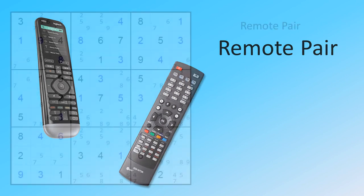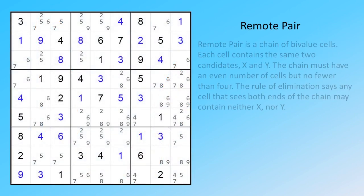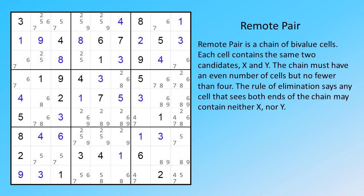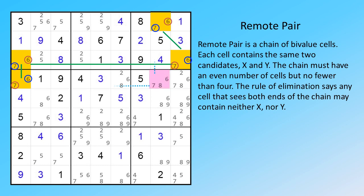Remote Pair. Remote pair is a chain of bivalue cells. Each cell contains the same two candidates, X and Y. The chain must have an even number of cells, but no fewer than four. The rule of elimination says any cell that sees both ends of the chain may contain neither X nor Y.